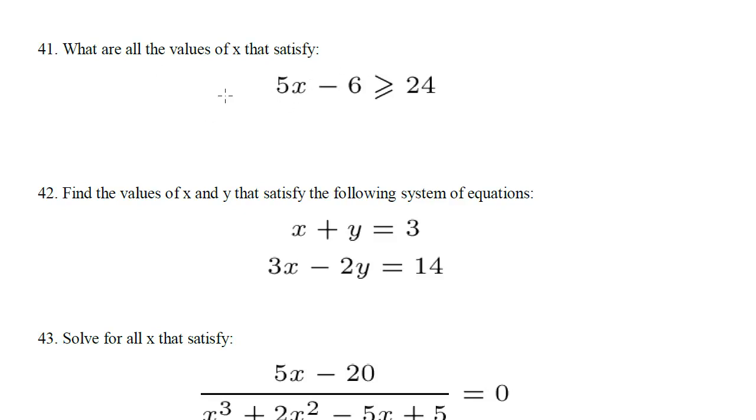Well, it's an inequality but we can just treat it like an equality or an equation until we need to change it back. So this is going to be 5x is equal to 30. We can actually just keep it greater than or equal to 30, and that means x is greater than or equal to 6, and that's your answer.